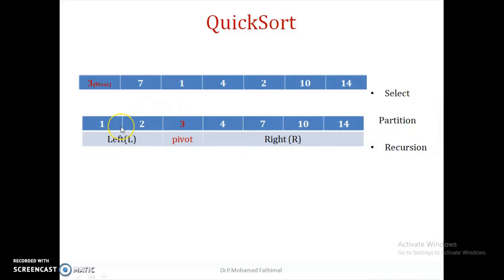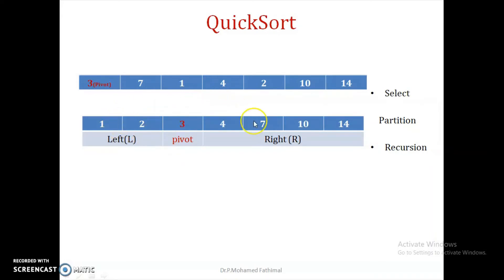If you take the elements on the left-hand side of this pivot element, all are lesser than the pivot element, and all elements on the right-hand side are greater than the pivot element. So this is the concept of quicksort — only the pivot element is compared with all the other elements. And once you partition it, the elements on the left-hand side will never be compared with the elements on the right-hand side.